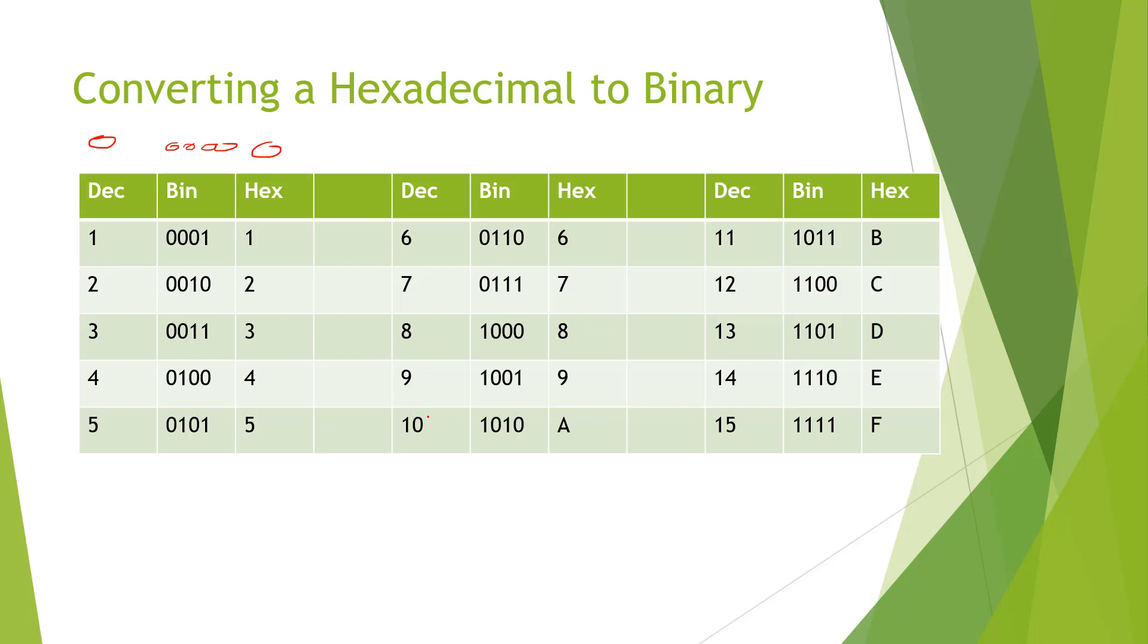Once we get to 10, decimal number 10 is represented by 2 digits. In binary, it's 1010. In hexadecimal, single digit is just A. And so forth.